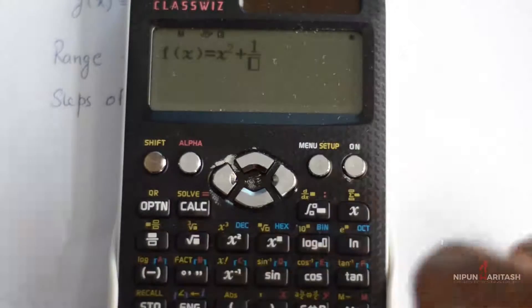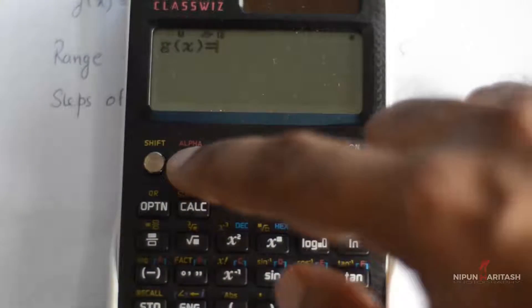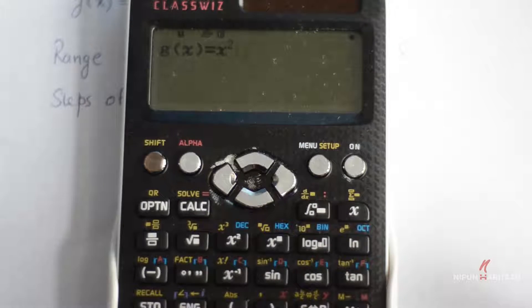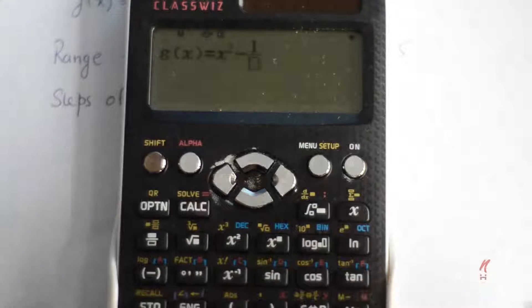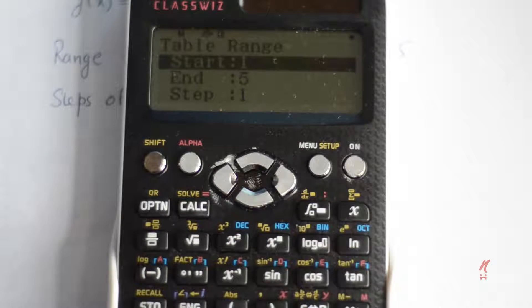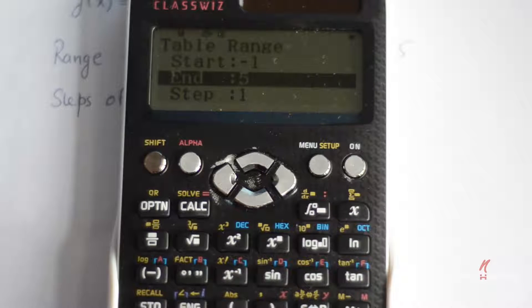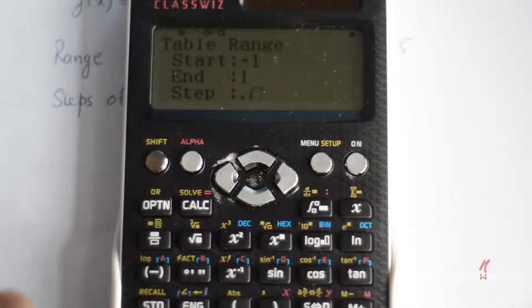The starting point to be -1 and I will press equal and the end point to be equal to 1 and I want the step size to be 0.5.